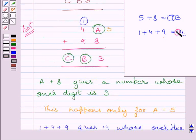Now 10th place of 14 is carry in the 100th column. Now no 100th column is present here. So we will write this 1 here as it is. So we get value of letter C as 1.